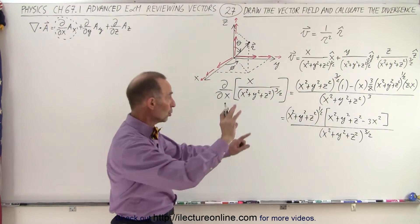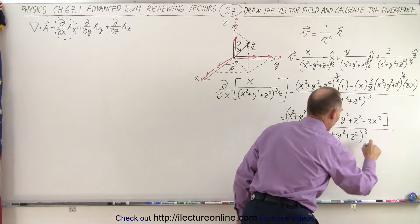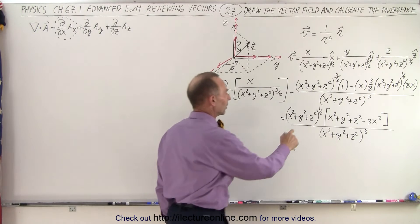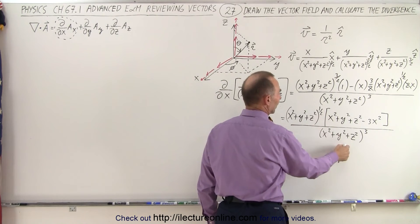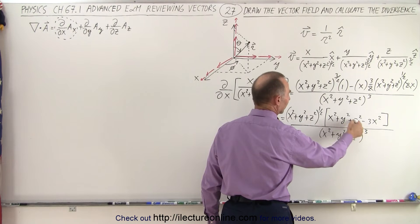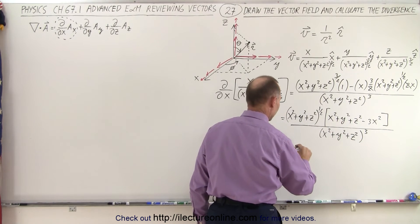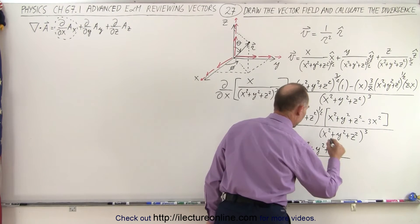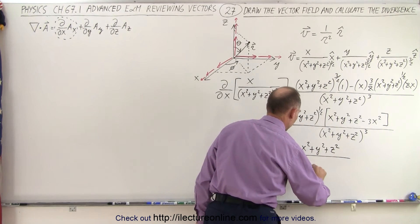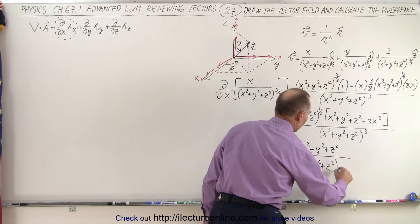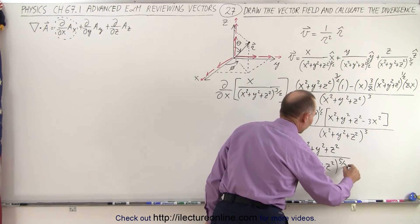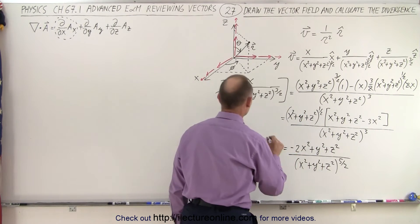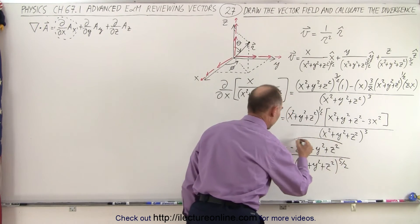Wait — not 3 halves power in the denominator. I forgot that we squared the denominator, so it's raised to the 3rd power. That means when we factor, we get a negative 1 half coming down, making it 5 halves in the denominator. In the numerator we get minus 2x squared plus y squared plus z squared, all divided by x squared plus y squared plus z squared to the 5 halves power — that's 6 halves minus 1 half equals 5 halves. And this is the partial derivative with respect to x.